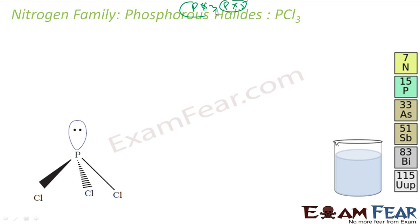This X can be fluorine, chlorine, or bromine. So let's study PCl3 first.